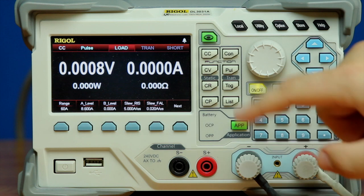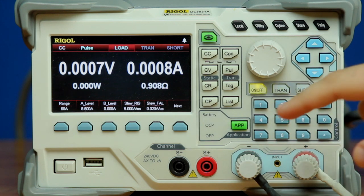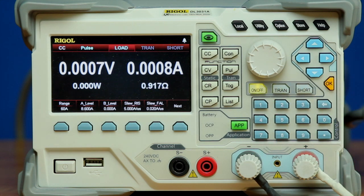So I'm going to press apply now, and then I can turn it on, and when I hit transient, the electronic load is going to replicate the same current draw that our robot was performing during its boot up power draw.